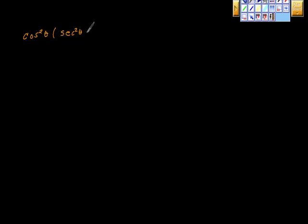The next problem looks like this: cosine squared theta times the quantity secant squared theta minus 1 is equal to sine squared theta. If you look at this a little bit, we know that sine squared theta is equal to negative cosine squared theta plus 1. So we have to look at this carefully.